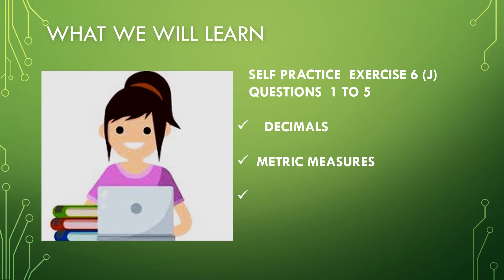Today we will learn and solve self-practice exercise questions 1 to 5, self-practice 6J of chapter 6. The chapter name is Decimals and the topic is metric measures. Let's solve some questions.